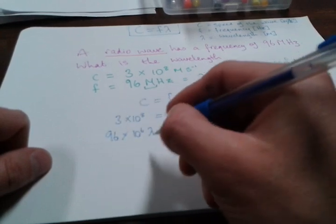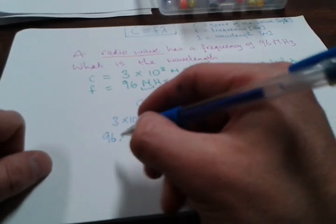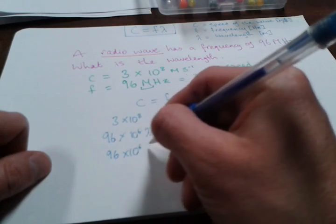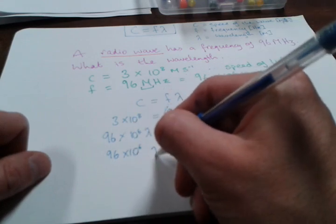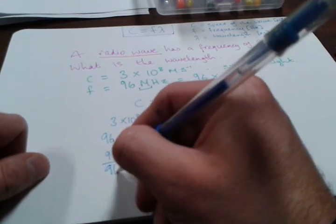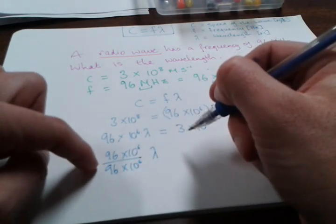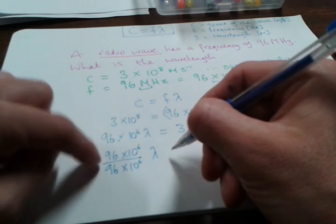Now because I've got 96 × 10^6 lambda and I just want lambda, what I want to do is divide both sides by 96 × 10^6. So I've divided this side by 96 × 10^6, so I have to divide this side by 96 × 10^6.